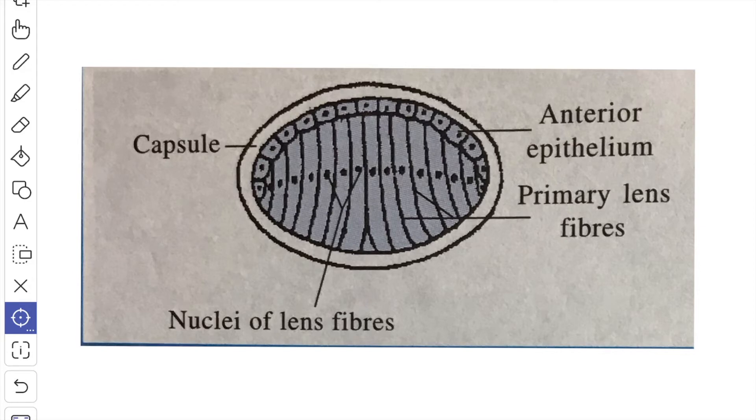Next, we will see about the anterior epithelium. Beneath the capsule, the anterior surface of the lens is lined by a single layer of low cuboidal epithelium. Towards the equator, the epithelial cells elongate and differentiate into lens fibers, which turn meridionally and form the bulk of the lens substance.